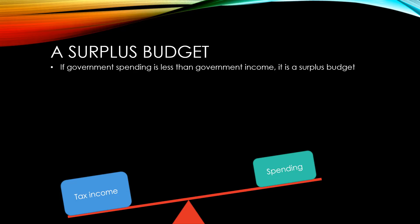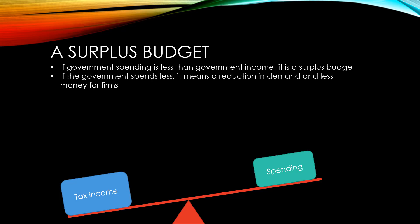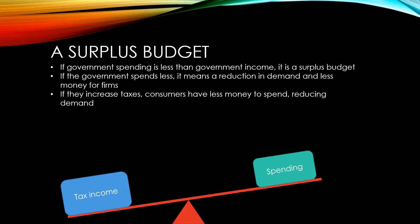A surplus budget might happen because the government spends less money or because they increase taxes. If they spend less, it means a reduction in demand for the firms that they used to spend their money with — this means less money for firms and they need fewer workers to produce a lower amount of output. If, on the other hand, they increase taxes, consumers have less money to spend, reducing demand.